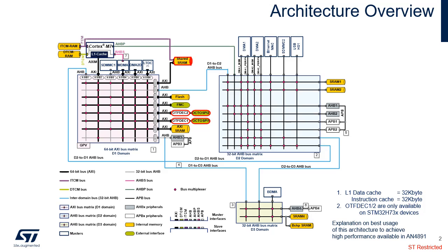The STM32H7273 offers 192 kilobytes of RAM split in three 64-kilobyte blocks. Those blocks can be connected either to AXI or ITCM. More explanations on STM32H72737475 architecture and performance are available in Application Note AN4891.